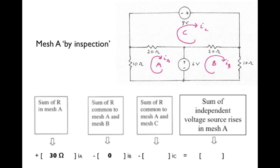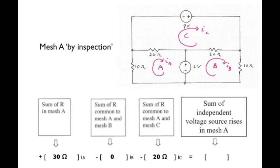Continuing with the equation for mesh A, what goes in front of the I sub B term is the sum of resistance common to both mesh A and B with the minus sign. Well, there are no resistors common to both mesh A and B in this circuit, so the value is 0 and we enter it as such. Continuing, what goes in front of the IC term in the mesh A equation is the sum of resistance common to both mesh A and mesh C with the minus sign. That is 20 ohms for this circuit, and we enter that value.